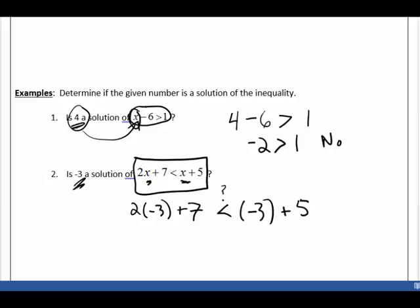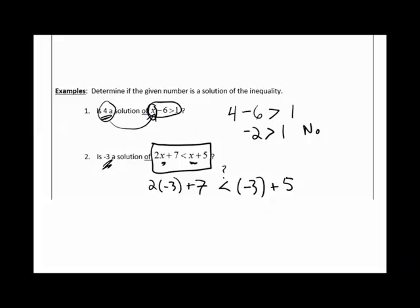I'm asking myself, is that true? So now I'm just going to simplify what's on the left and simplify what's on the right. Two times negative three is negative six. That's negative six. Add seven to that and I get positive one. I'm still wondering what's happening here, so I'll add that question mark. Negative three plus five is positive two. And then I ask myself, is one less than two? And the answer is yes.